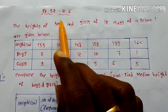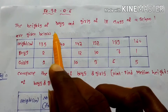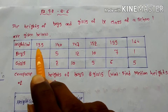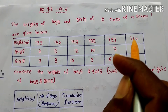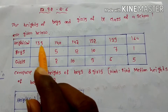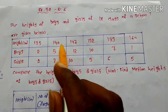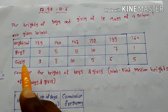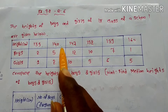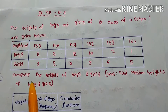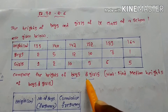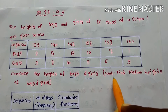Exercise 9.2, question number 6: the heights of boys and girls of 9th class of a school are given below. The heights in centimeters are 135, 140, 147, 152, 155, and 160. The first row indicates boys and the second row indicates girls. We have to compare the heights of boys and girls.